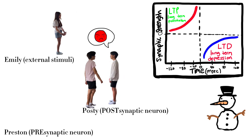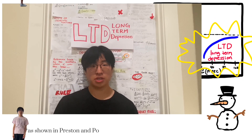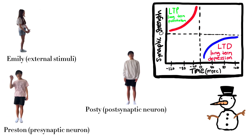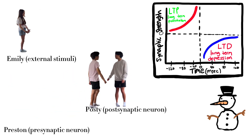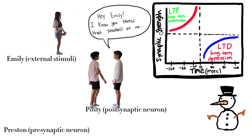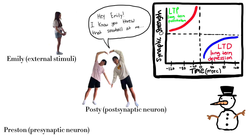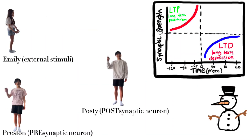This results in Posty turning around and assuming that Preston threw the snowball, which results in a weaker connection between them. The weaker connection represents LTD, which filters out irrelevant information in our brain. In a different scenario, if Emily throws a snowball right after Posty turns around, it results in a stronger connection between Preston and Posty. This stronger connection is LTP, which keeps relevant information relevant to our brain.